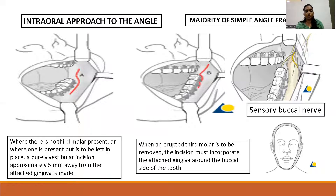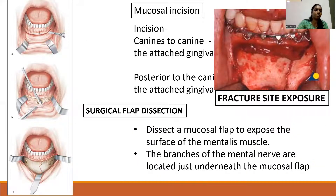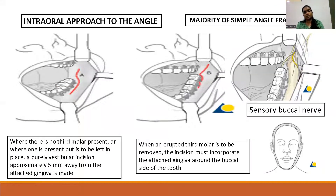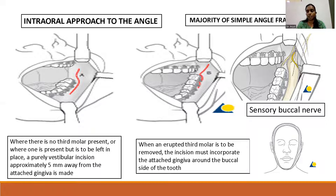For the body of the mandible, the same vestibular incision procedure is used and can be extended up to the second molar region, allowing visualization and reduction of symphysis, parasymphysis, and body fractures. At the angle of the mandible, a different approach is needed. When no third molar is present, the vestibular incision can be continued along the anterior ramus. If an impacted third molar is present, a crestal incision with a posterior releasing incision is used to expose the angle at the external oblique ridge. This can cause temporary injury to the buccal nerve, which will recover later.